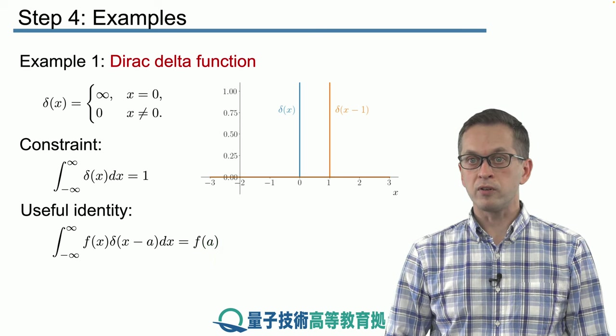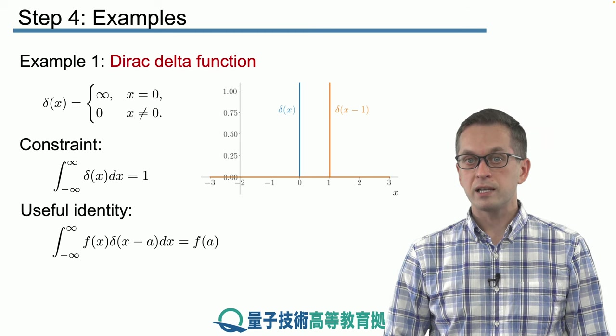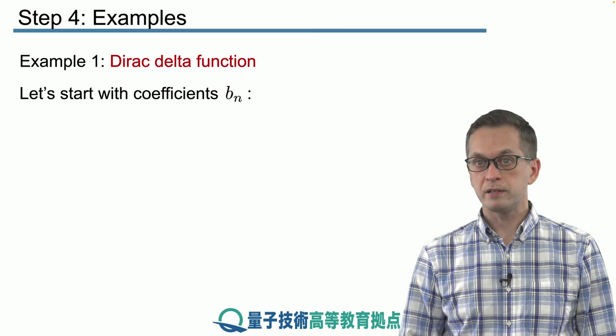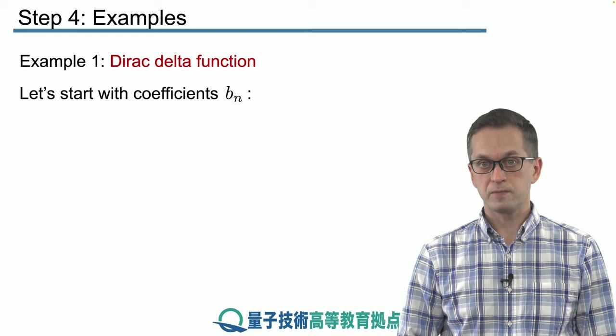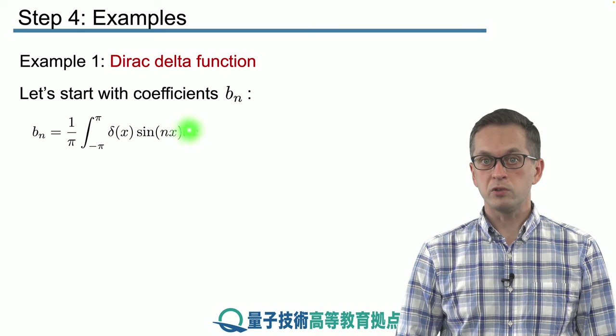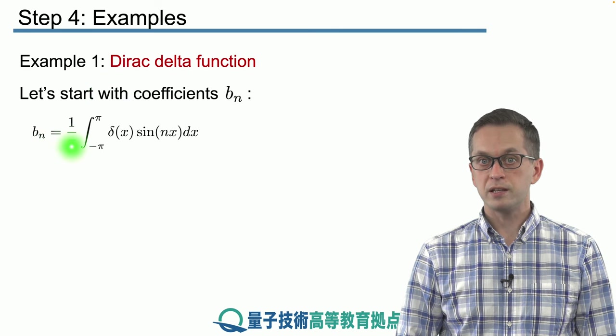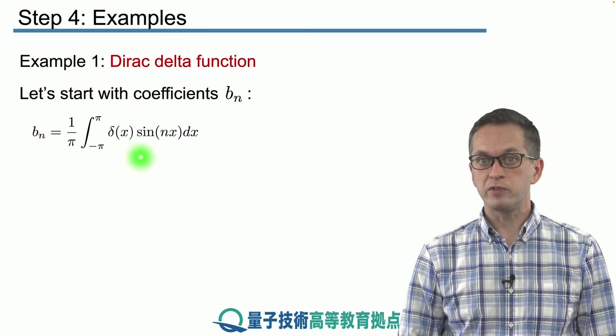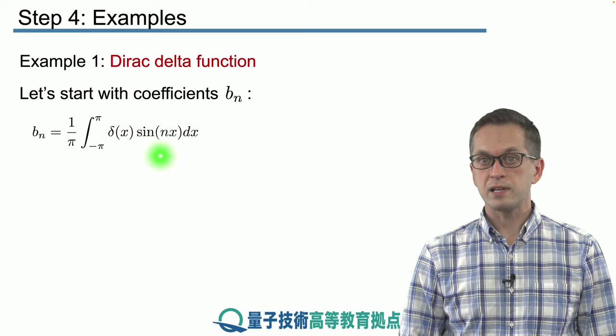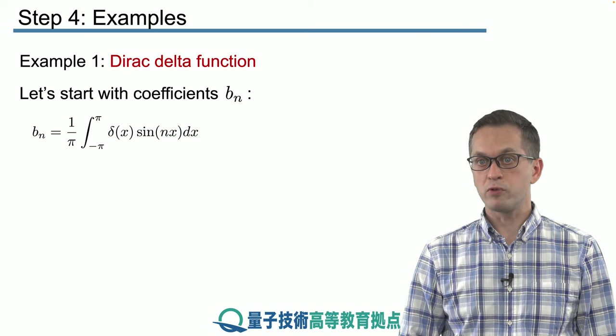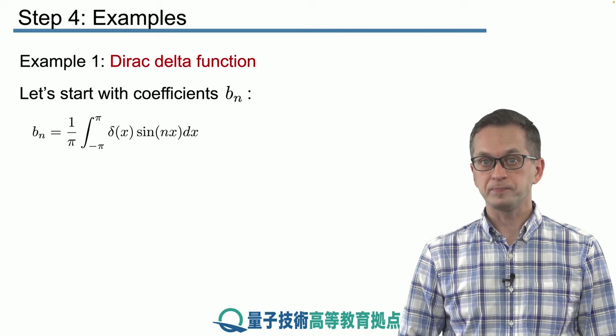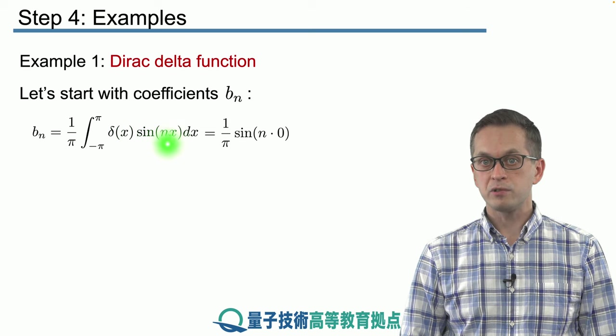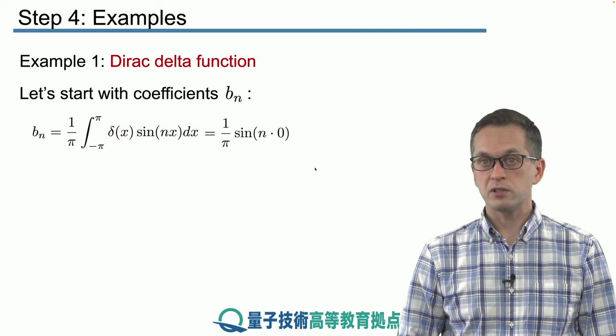So now that we familiarized ourselves with the delta function, let's compute the Fourier series. We're going to start with the coefficients bn. So to remind you these are the coefficients for the sines in our Fourier series. So all we have to do is just use our formula derived in the previous step. bn is equal to 1 over π times this whole integral. And here you see why we had the identity on the previous slide. We have δ(x) times sin(nx) dx integrating over our period which goes from minus π to π. So this gives us the value of sin(nx) at x equals zero.